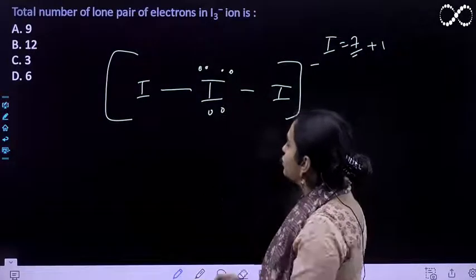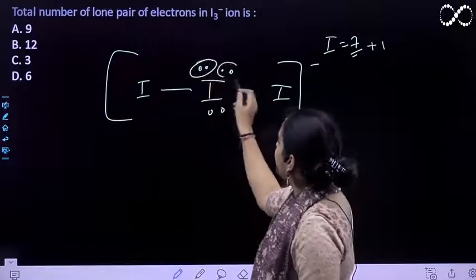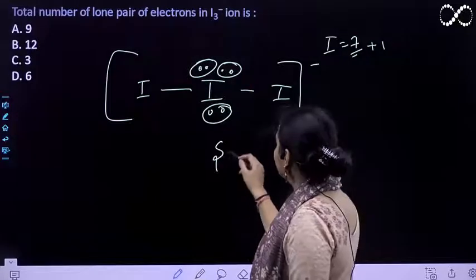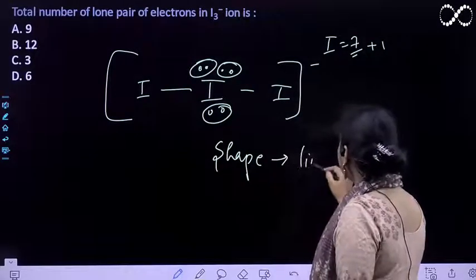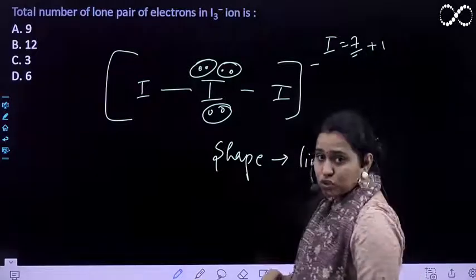And you are being asked about the lone pairs. So lone pairs: one, two, three. If the shape is asked, the shape will be linear. If geometry is asked, electron geometry...